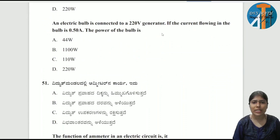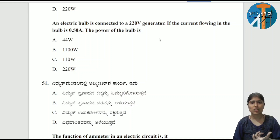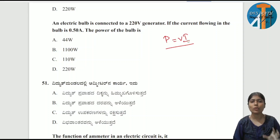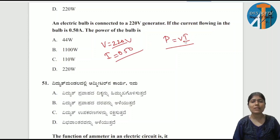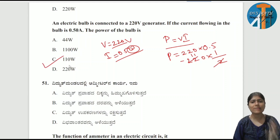An electric bulb is connected to a 220 volt generator. If the current flowing in the bulb is 0.50 ampere, find the power of the bulb. Using the formula P = V × I: voltage is 220 volts, current is 0.50 = 1/2. So P = 220 × 0.5 = 110 watts. Option C is the correct answer.